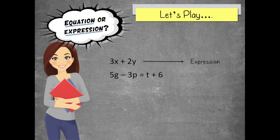How about 5g minus 3p equals t plus 6. Yep, that's an equation.